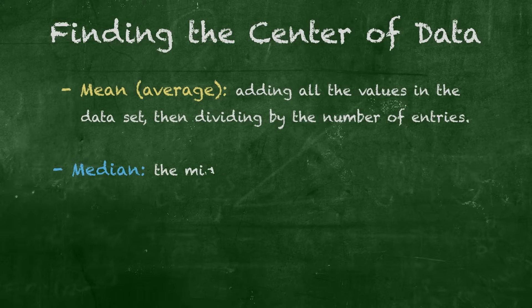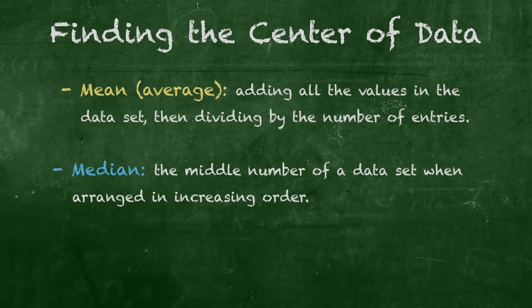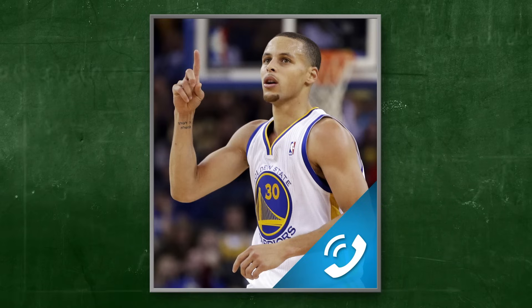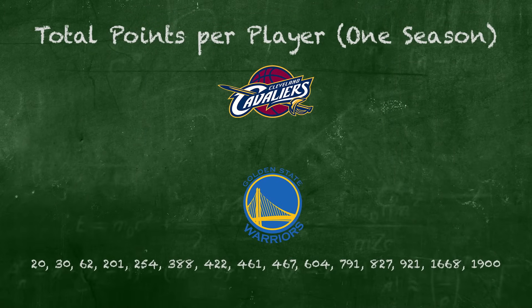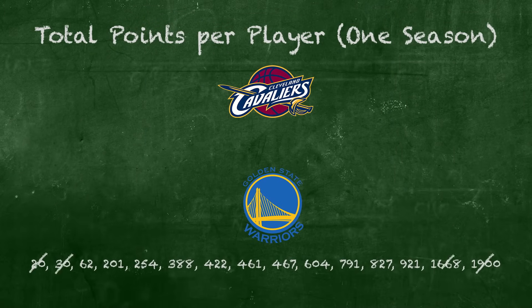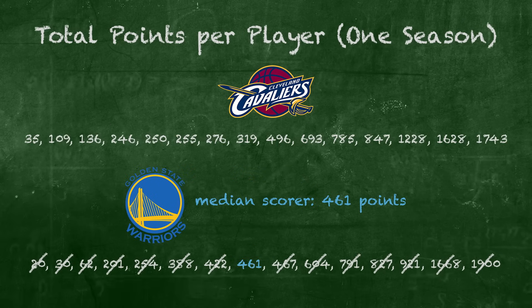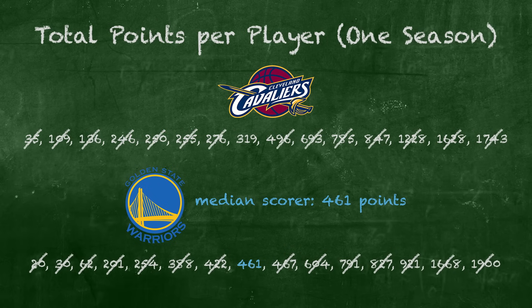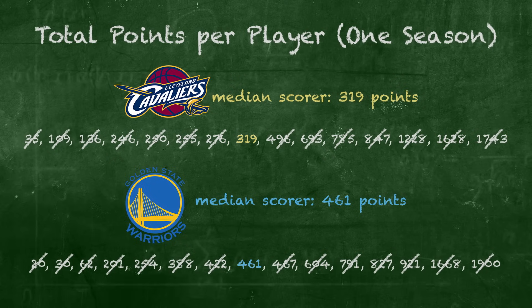The median would be the middlemost number in a data set after putting all the numbers in increasing order. Take the total points of my NBA champion Golden State Warriors. If we rearrange the total points per player in increasing order, we see Golden State's median is 461 points. Now, if we do the same for Cleveland, we find their season median was only 319 points. Based on these numbers, it's a no-brainer who the better team was.